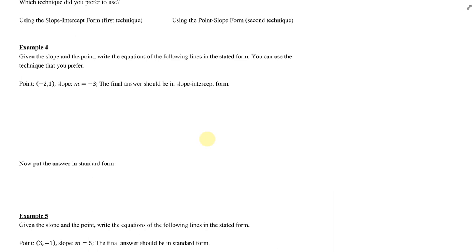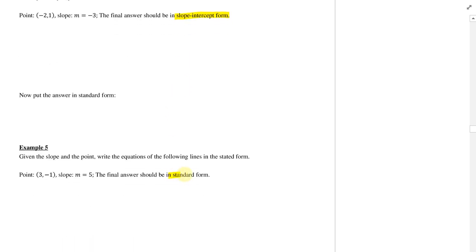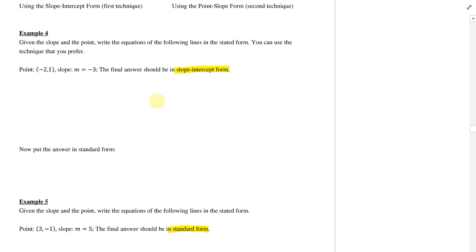What I want to do now is examples 4 and 5 so you can pause the video and try both of them. In the first one, you're going to put your answer in slope-intercept form. For the other one, you're going to put your answer in standard form — this is a bit of a challenge question because you have to remember what we did to get into standard form. Either way, you start both the same. Maybe just start with 4, hit play when you're ready.